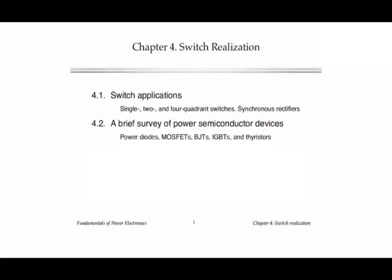In this video we will discuss switch realization. We will discuss the realization of switches in power converters using semiconductor devices such as power transistors and diodes. There are two major topics: first, when we have an ideal switch, how do we decide whether to replace it with a transistor or a diode? I'll introduce the idea of single quadrant, two quadrant, and four quadrant switches and how to decide which one to use depending on the application.